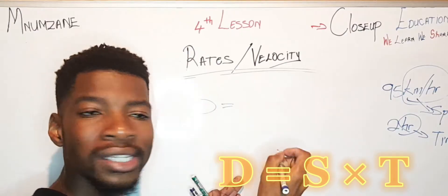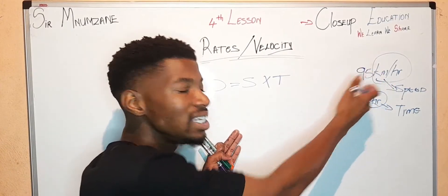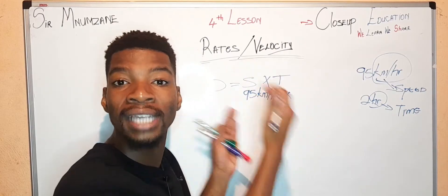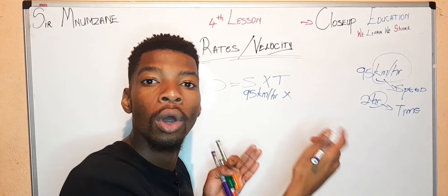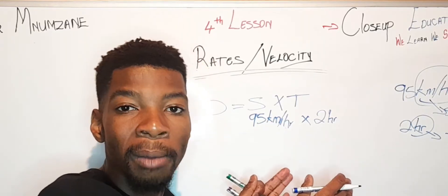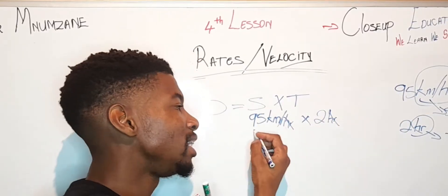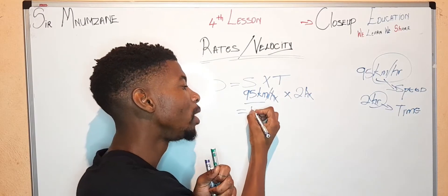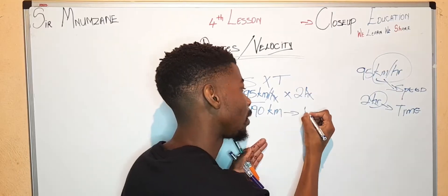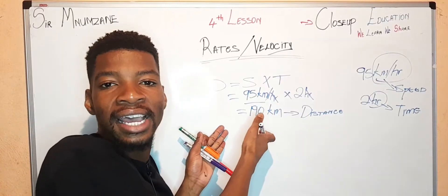Using the DSTV diagram: distance equals speed multiplied by time. Our speed is 95 kilometers per hour, and our time is two hours. Before multiplying, we fix the units — the 'hour' cancels 'hour' — leaving us with 95 kilometers multiplied by 2. Our answer is 190 kilometers.